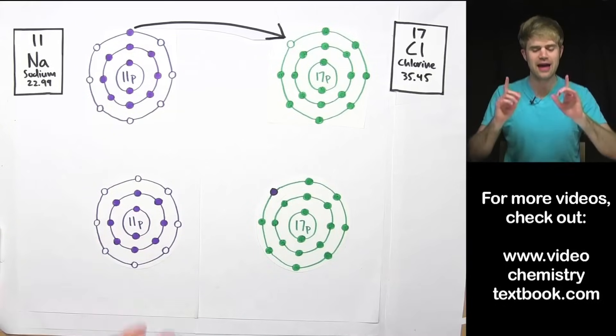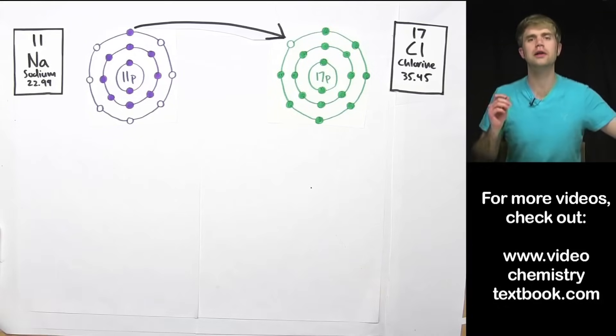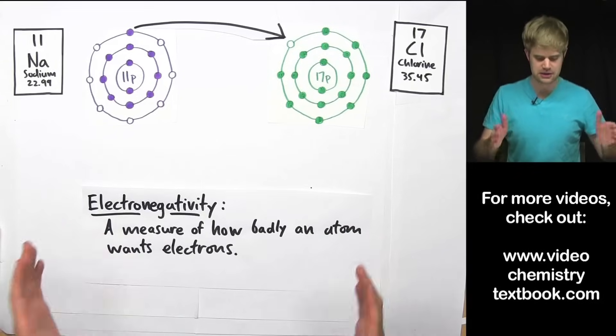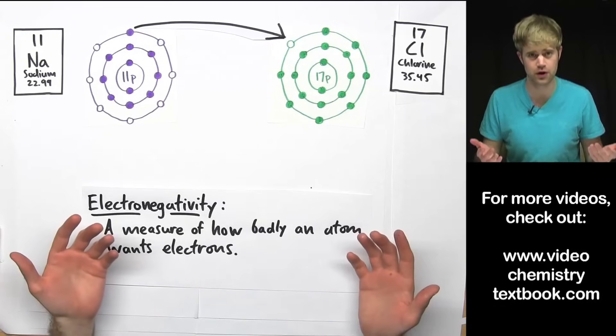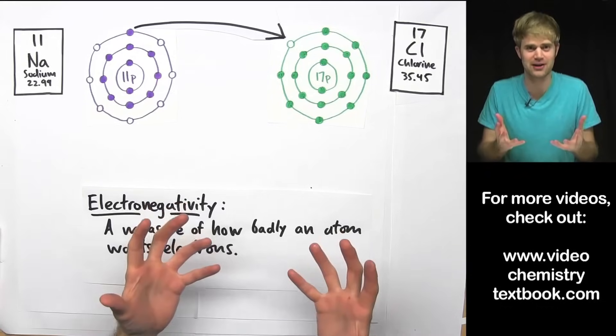Well, that's a great question. The answer has to do with a topic called electronegativity. Electronegativity is a measure of how badly an atom wants electrons. The higher an atom's electronegativity, the more greedy it is for electrons, the more it wants to try to steal them from other atoms.